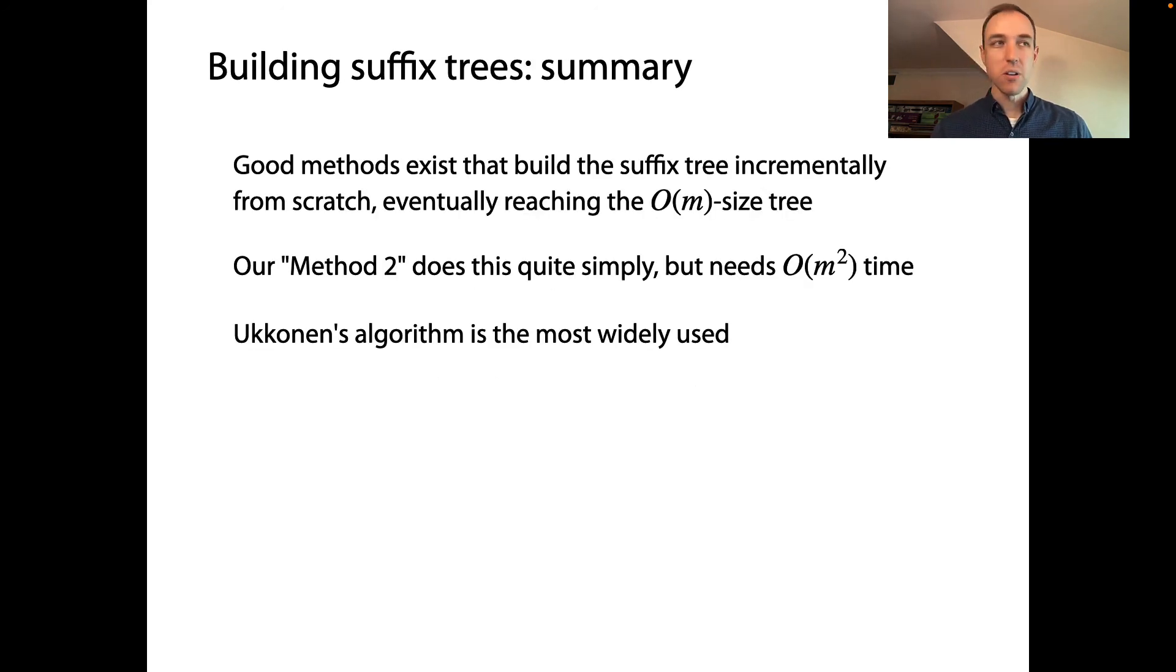So to summarize, good methods exist to build this suffix tree incrementally and from scratch, eventually reaching the final O(M) size tree. We saw a very simple way of doing it in the demonstration I showed, but that method was O(M²) time. What we called method two is O(M²) time. Ukkonen's algorithm is an example of an algorithm that achieves O(M) time and space, which makes for an incredibly practical algorithm for building suffix trees. The data structure is no longer quadratic space. Even building the data structure is now linear time and linear space.